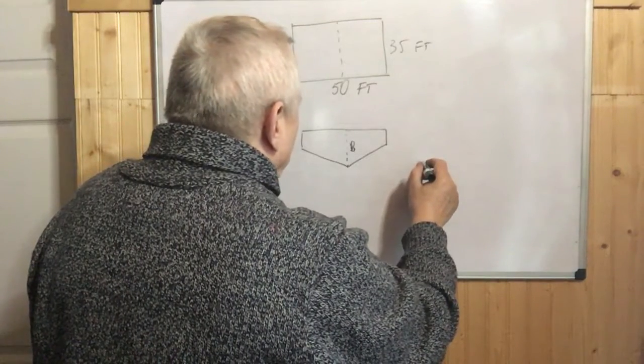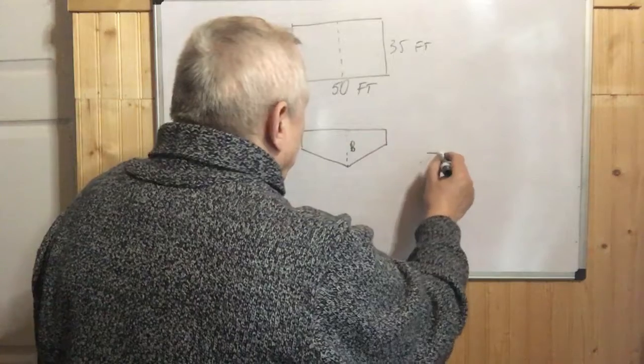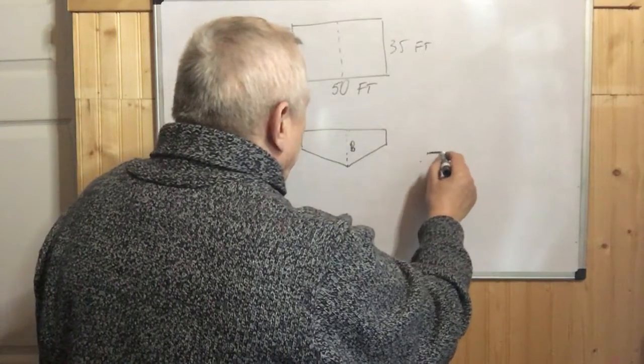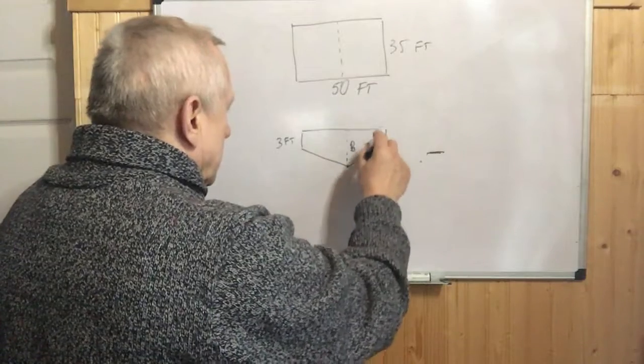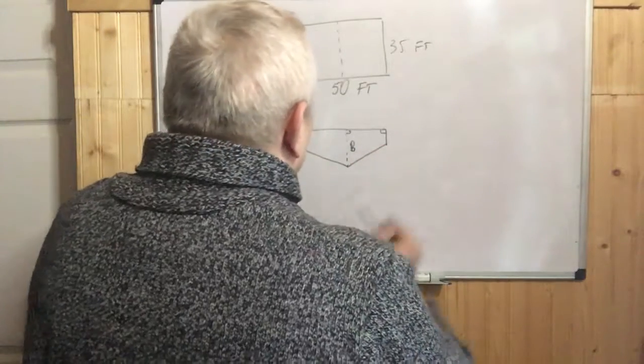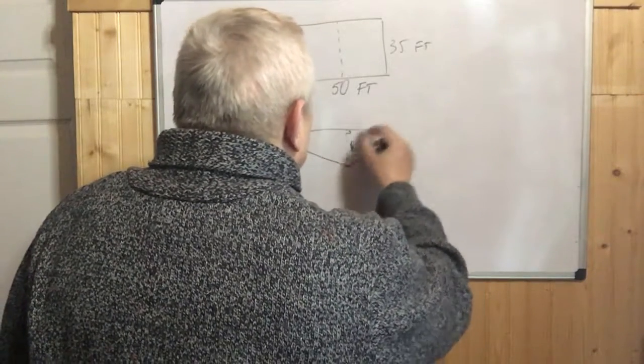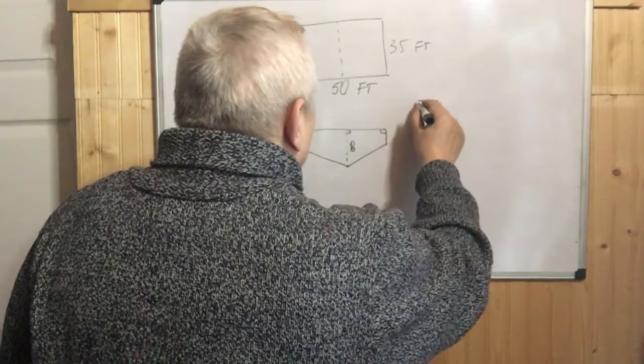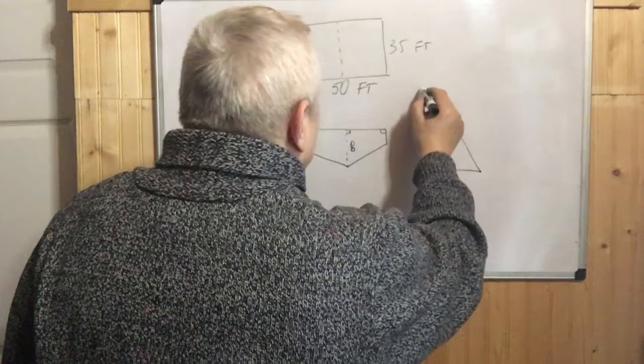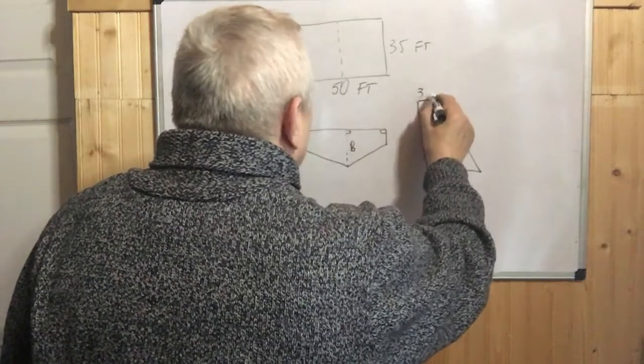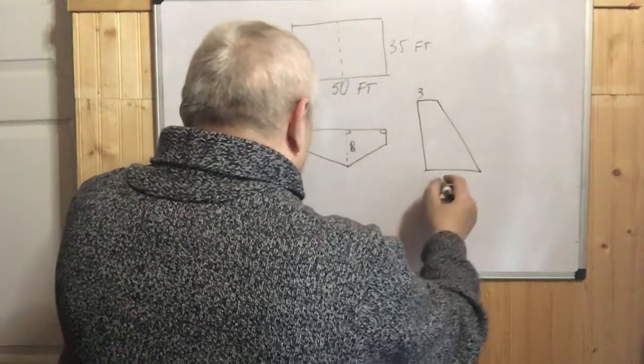Here you can see this is the large base, this is the smaller base. I will draw it here - it's a trapezoid, something like that. The small depth on the side is 3, and in the middle is 8.